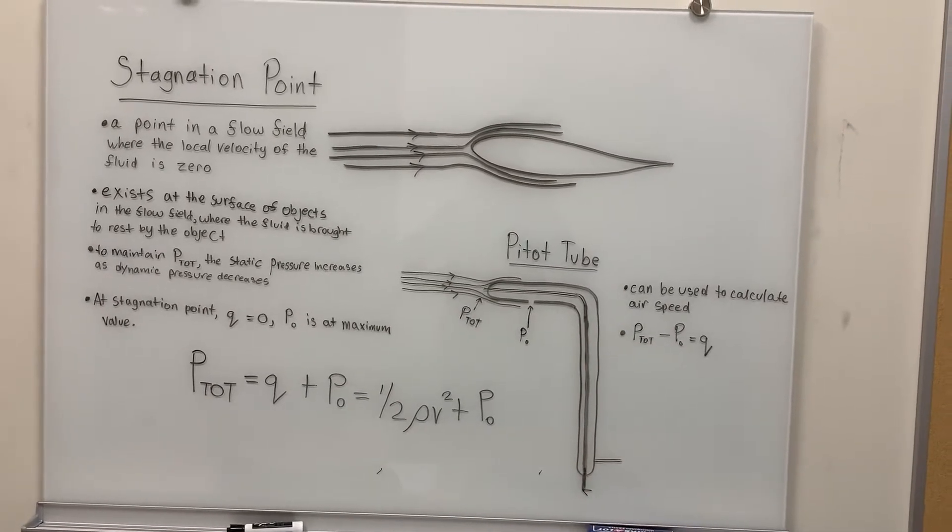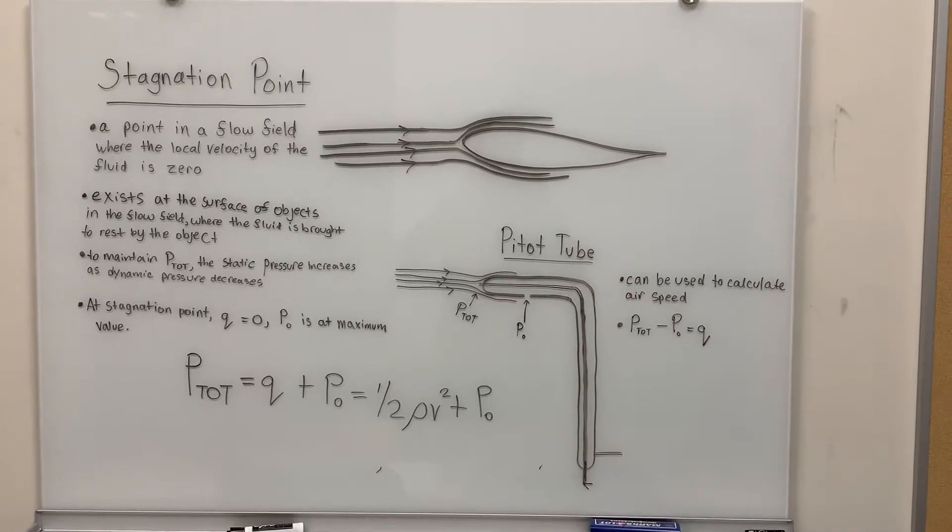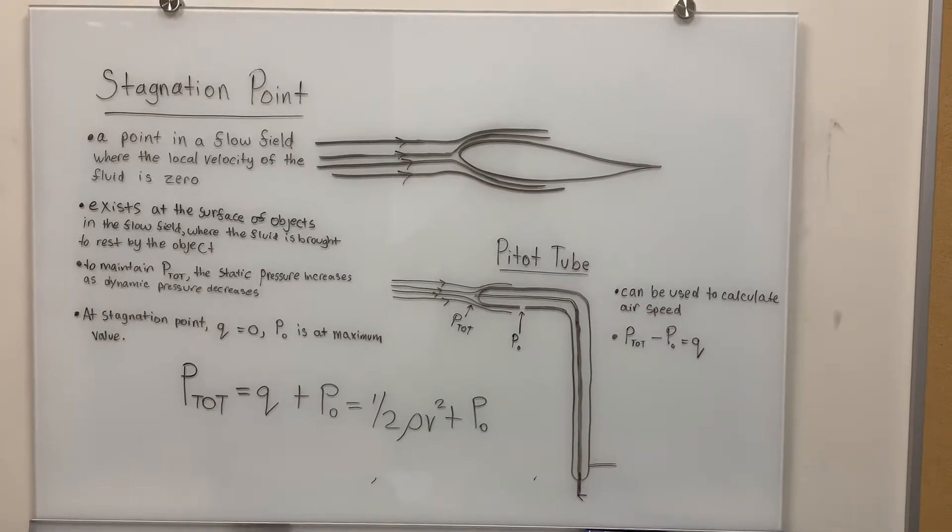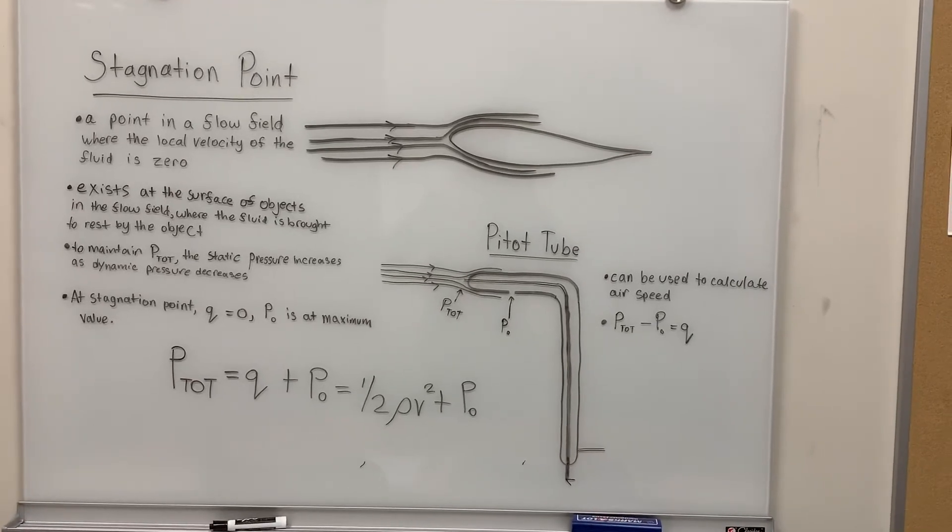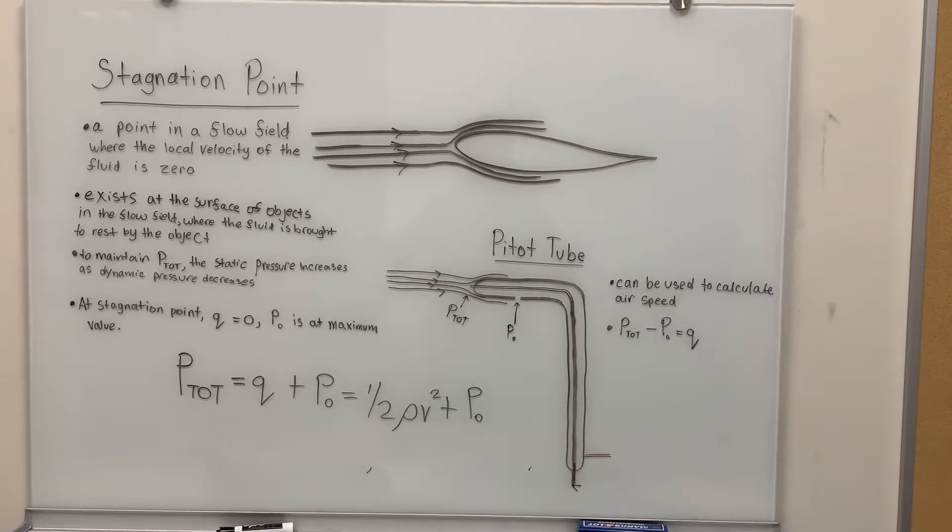As the fluid flows from left to right, it comes in contact with the airplane wing. Because it is impossible for the air to pass through the airplane wing, the fluid flow must change direction.